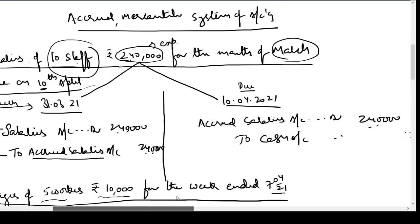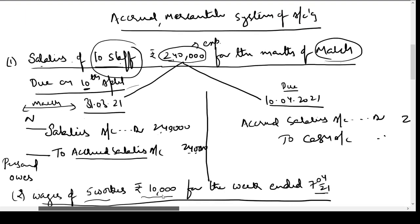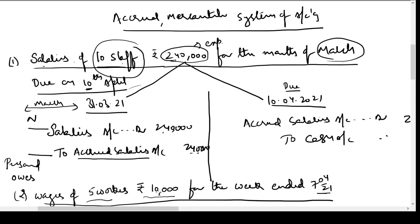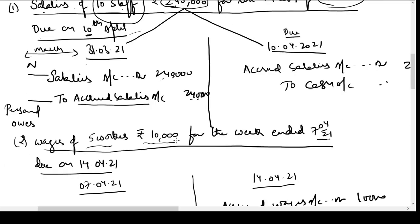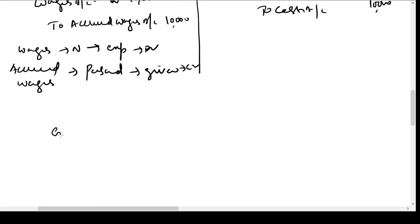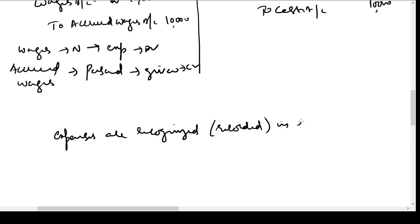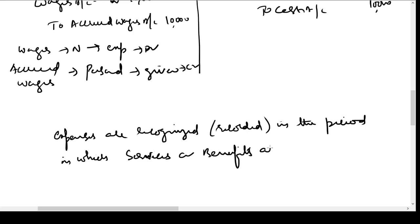That is the big difference between accrual system of accounting and cash system of accounting. Under accrual system of accounting, as soon as we enjoy the services or get the benefits from work done by another party, we have to record the expense in the same period. We should not wait for the payment. In accrual system of accounting, expenses are recognized — that means recorded — in the period in which services or benefits are received.